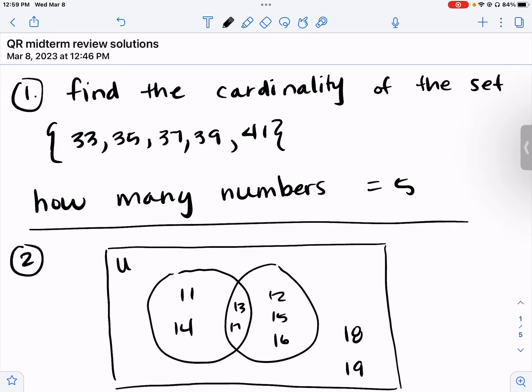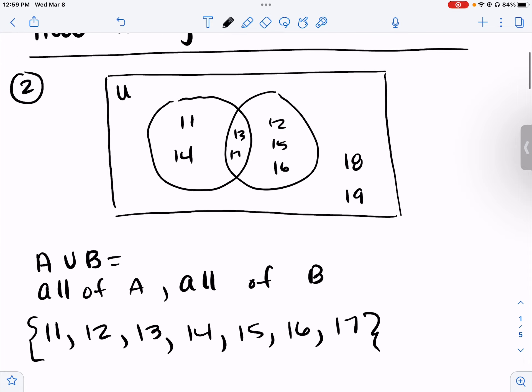Midterm review solutions. Find the cardinality of the set {33, 35, 37, 39, 41}. That just means how many numbers there are. There are five numbers, so the answer is five. Number two: A union B means write everything that's in A and everything in B.